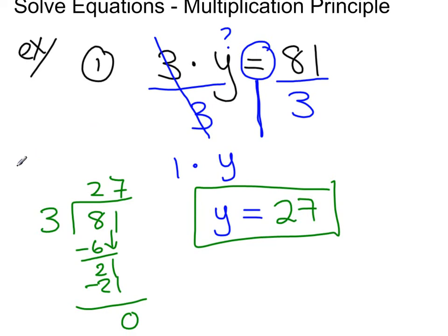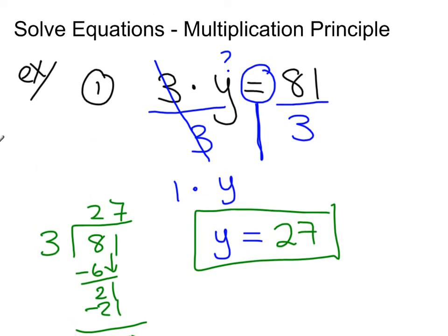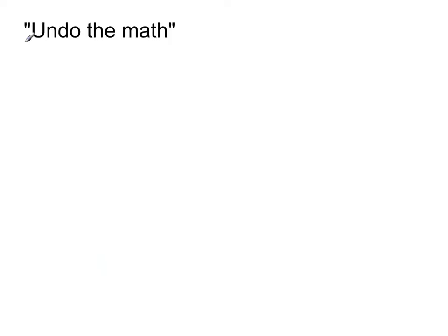All right. So that is it for how we solve equations. We've been guessing and checking beforehand. But now what we are going to do is this new thing where we undo the math. If we're multiplying, we undo it by dividing.